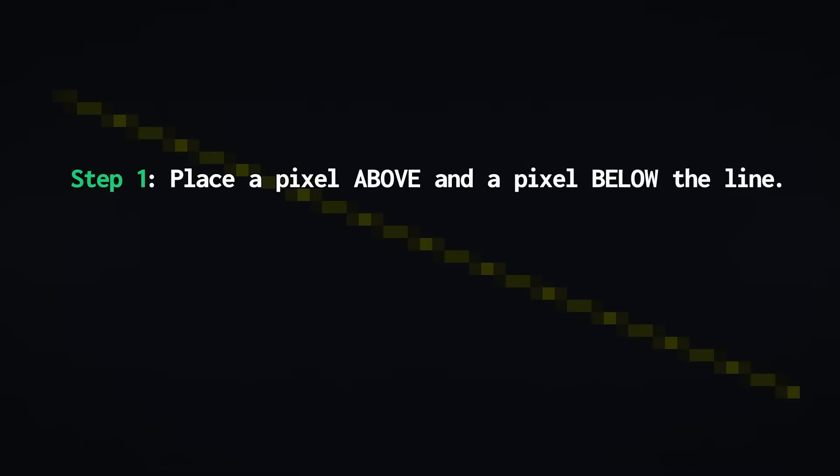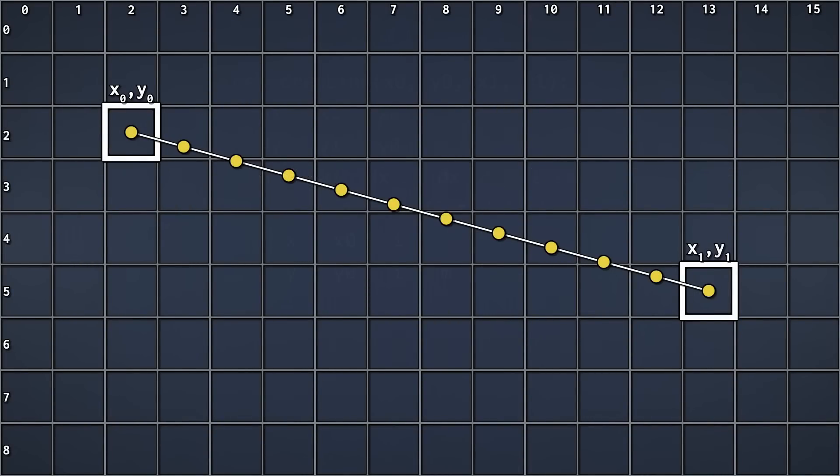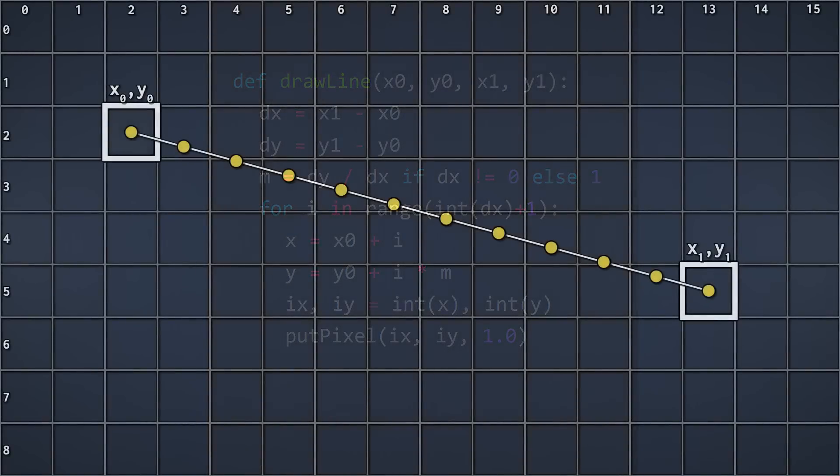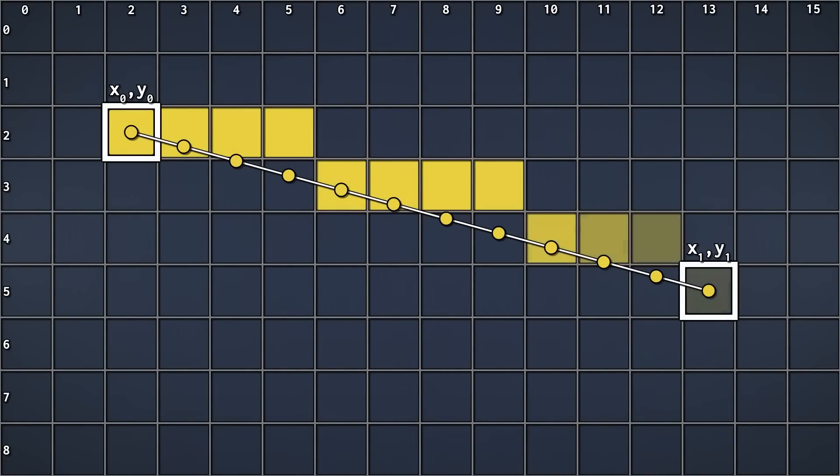Now remember, our first step is to place a pixel above and below each plotted point. This is quite simple. Let's turn our coordinates to integers, and then place pixels at these coordinates. Here's the result we get. Notice how all pixels are right above our line. That's exactly what we wanted.